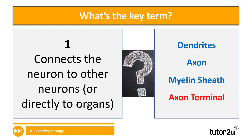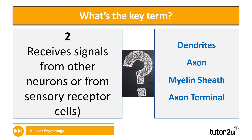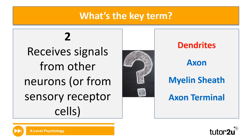The answer for that one was axon terminal. The second definition is 'received signals from other neurons or from sensory receptor cells.' Is that dendrites, axon, myelin sheath, or axon terminal? Take a moment to think about it. And the answer for that one was dendrites.